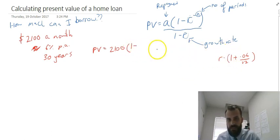1 minus, so that must be like 1.005, I believe, 1.005, to the power of negative 30 years times 12, negative 360, all over 1 minus R, so R was 1.005, so 1 minus R is 0.005.